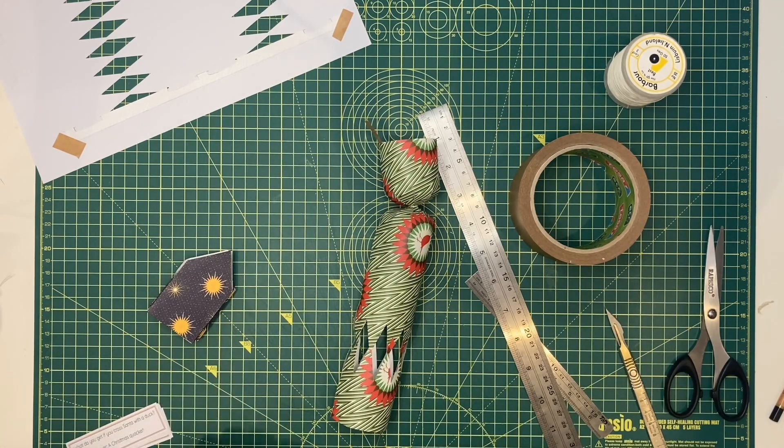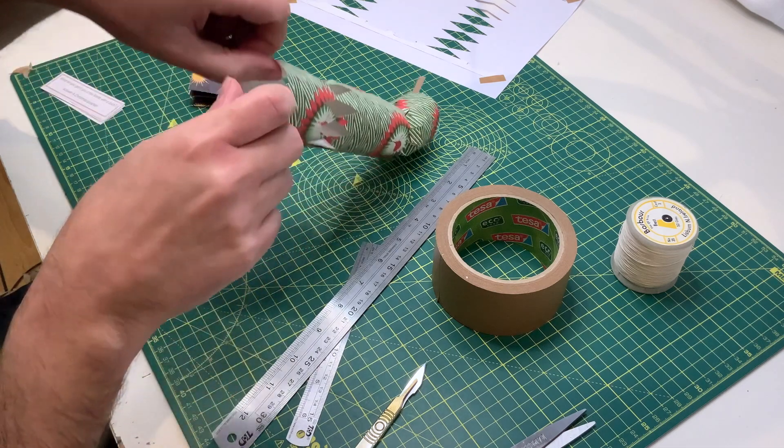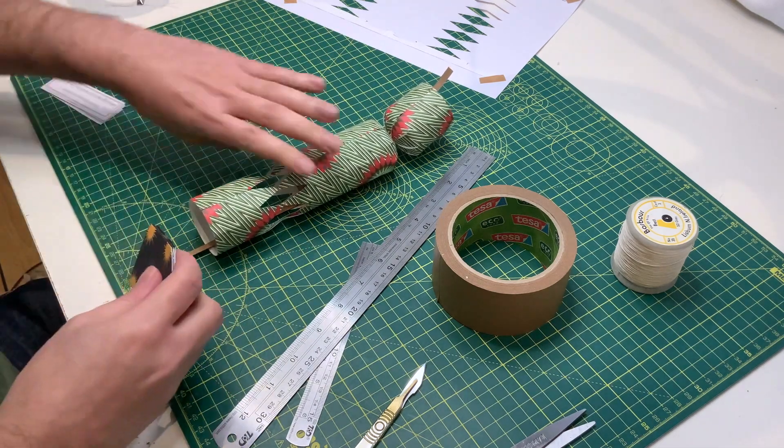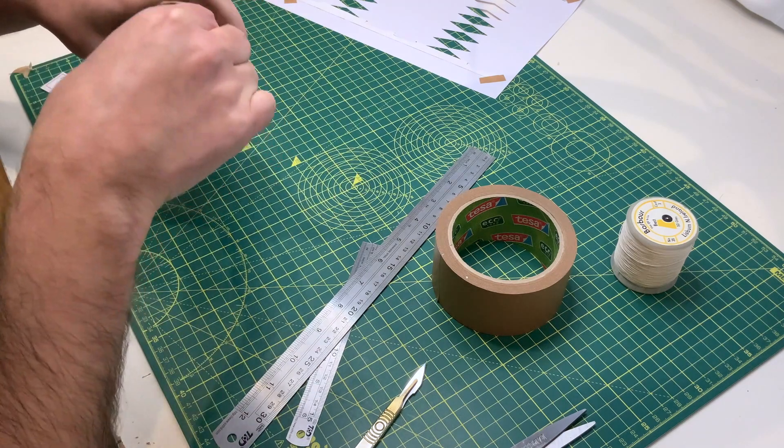Now it's time to fill the cracker. Gather your jokes, paper hat, and any trinkets that you might be adding, and insert them through the side that's still open.